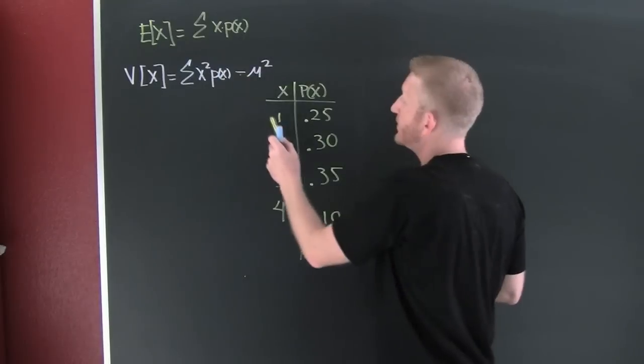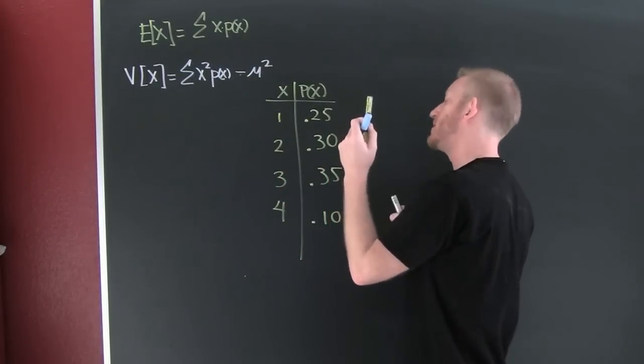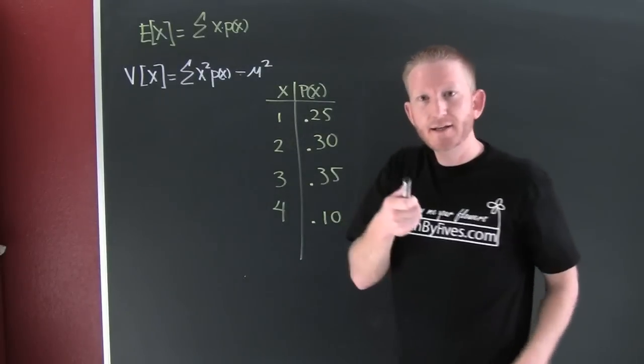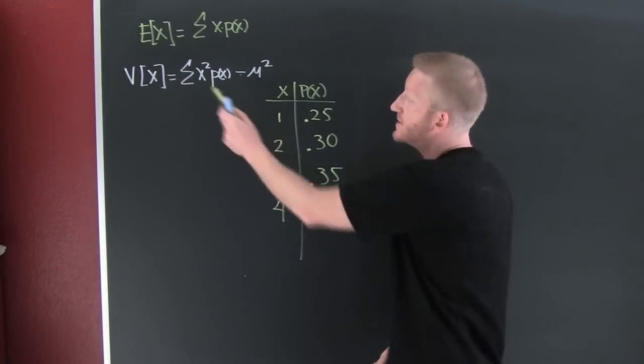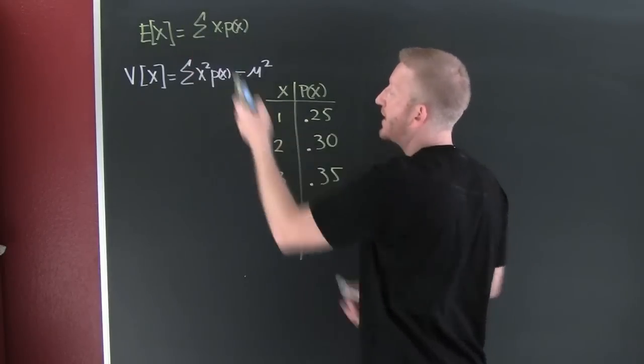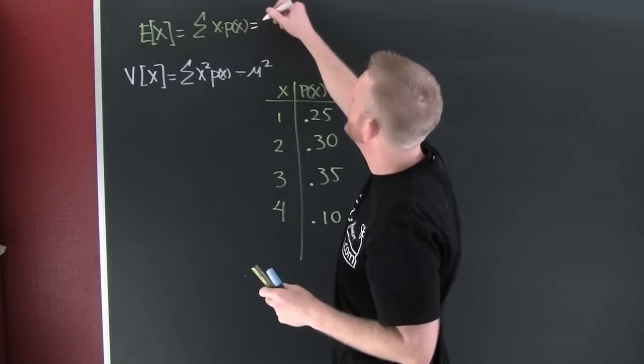What is that? That's the product of the value times the probability. Well, what are we going to do? We're going to go through and we're going to find the variance. And here's how. The variance is the sum of the x's squared p of x minus that guy. Here, this is your mu.